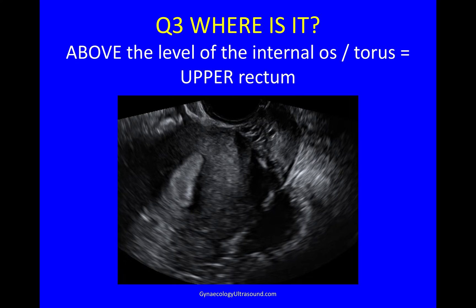So now, where is it? We know it's bowel, and it's less likely to be stenosing — but where is it? It's above the level of the internal os stroke torus. This is a longitudinal view of the uterus — you can see the cervix, and the endometrial cavity does something like that because it's retroflexed. This is where the bladder attaches to the uterus — the level of the internal os — and this is the level of the torus, which is where the utero-sacral ligaments insert. From the IDEA classification, a bowel nodule above this line is called upper rectum, and below this line is lower rectum. So this is an upper rectal nodule.